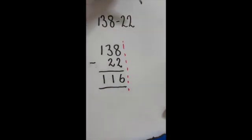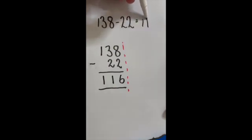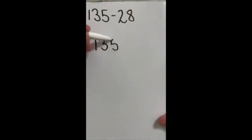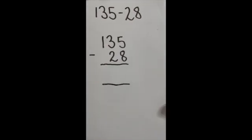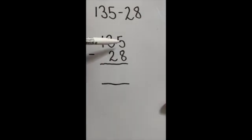The second thing that people make a mistake on is this: if we've got 135 take away 28, I'm going to write my sum out. Remember, I've lined them up against the right-hand side.